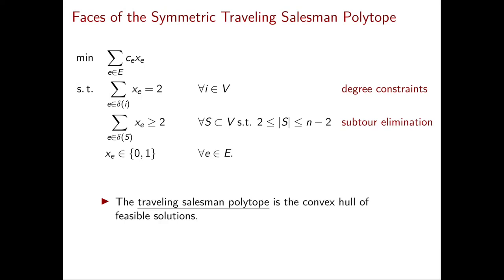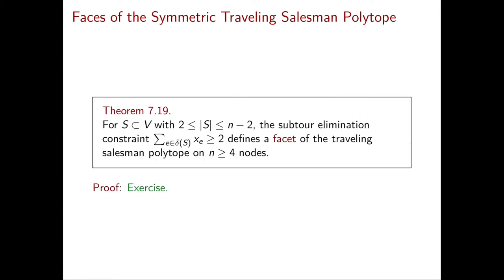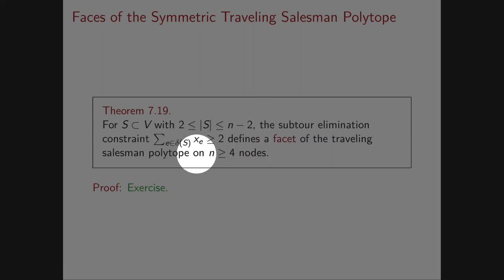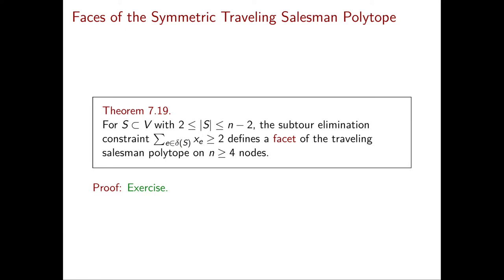The traveling salesman polytope is the convex hull of the feasible solutions to this integer programming problem. It turns out that subtour elimination constraints are fundamental to define the traveling salesman polytope. In fact, this theorem says that every subtour elimination constraint defines a facet of the traveling salesman polytope if you have at least four nodes, and I leave this proof as an exercise for you.